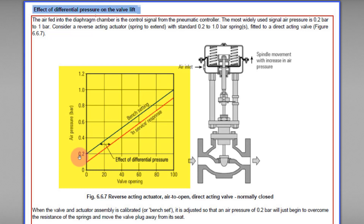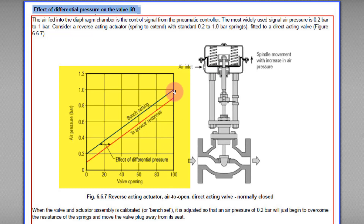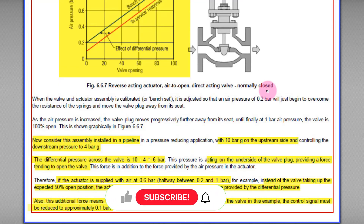The differential pressure provides additional force alongside the instrument air pressure, helping to push the valve plug outward — meaning it helps open the valve. So instead of needing more than 0.2 bar or 3 psi to start opening, you only need about 0.1 bar. And instead of 1 bar or 15 psi to fully open, you only need about 0.9 bar.